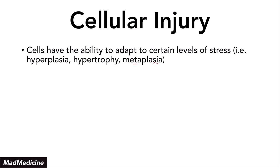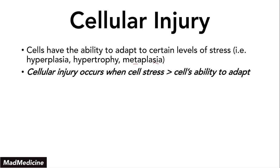Now, what happens when you exceed the cell's ability to adapt? What happens when the amount of stress placed upon the cell far exceeds the cell's ability to adapt to that stress? Well, the cell will get injured — and that's how cell injury occurs.